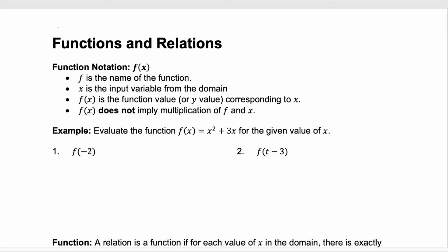Function notation is typically written as f of x, or another letter — g of x, h of x are very common — where f is the name of the function. You may see f of x and g of x together, and the different letter, f and g, is just telling you different names for the functions.